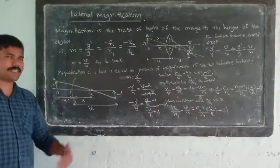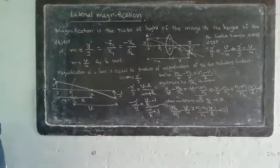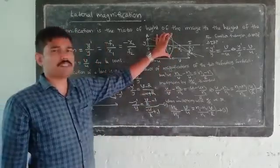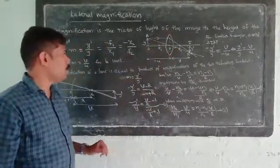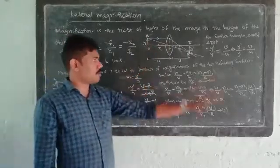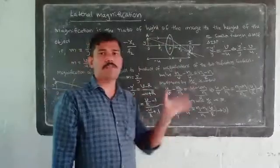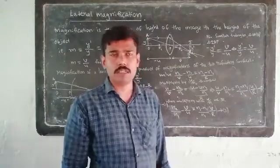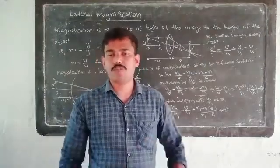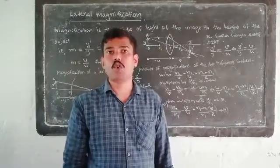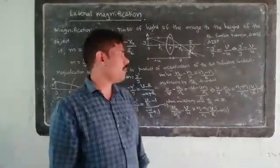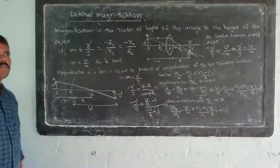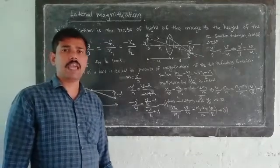This is the product of magnification of the two refracting surfaces. The magnification of the refracting surfaces is the product of the individual magnification.